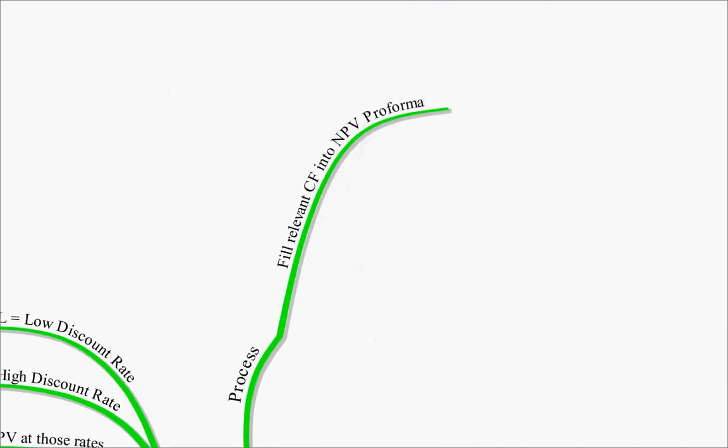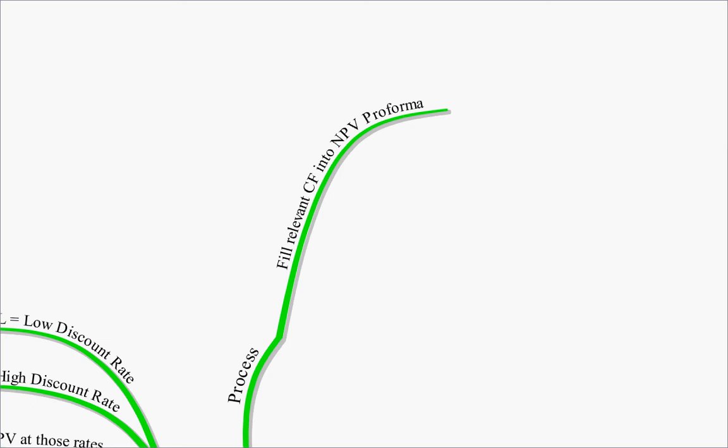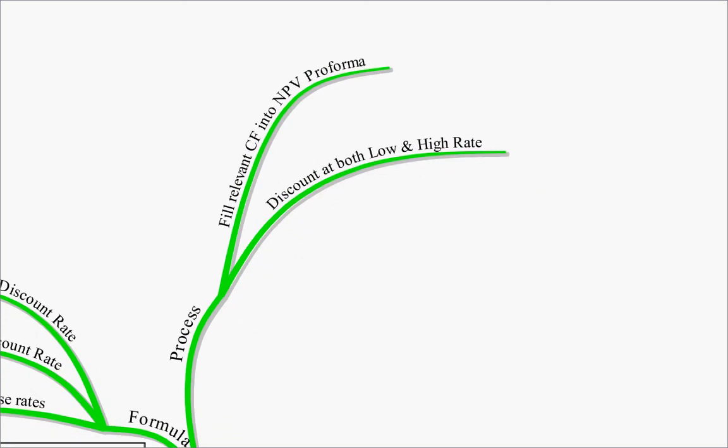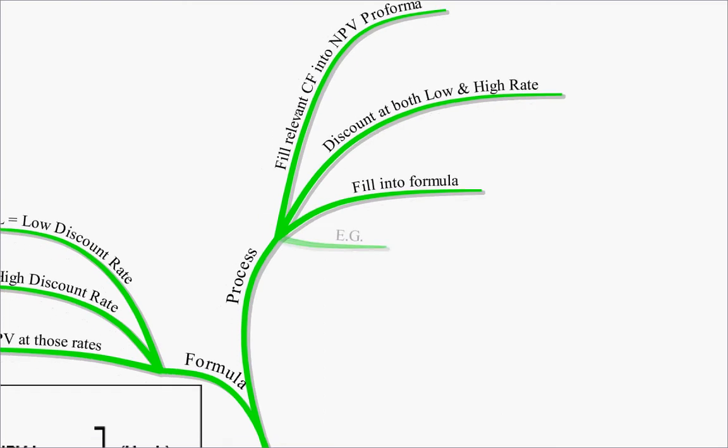So the process again then is to fill the relevant cash flows into your net present value pro forma, same as for an ordinary net present value calculation. We then discount at both the low discount rate, and then a high discount rate, and get the net present value at both. And we then fill them into our formula, which will get our internal rate of return. And we did an example of that in class, it's in your notes.